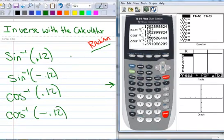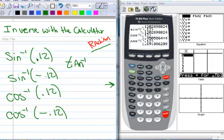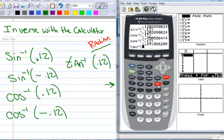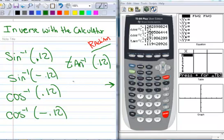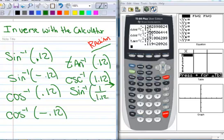Let's do a tangent just so you see how that one works. So the inverse tangent of 0.12. And I can rewrite that as the inverse sine of 1 over 1.12.